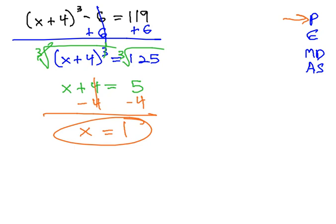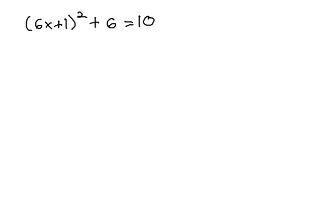Let's try another example where we have to isolate the exponent first before we solve. Again, here we have 6x plus 1 squared plus 6 equals 10.